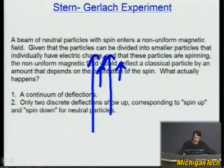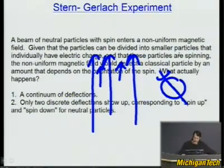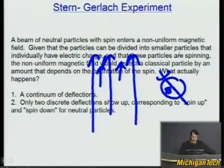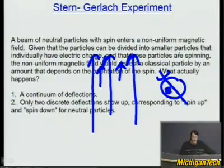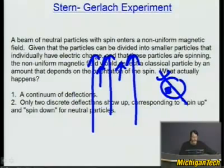So if you have your magnetic field with more field lines at the top, and you have a classical spinning object, you send it through the experiment. The orientation you get out would classically be a continuum of deflections. But now do this experiment in reality — do you get a continuum of deflections, or do you get only two discrete deflections corresponding to spin up and spin down for neutral particles?